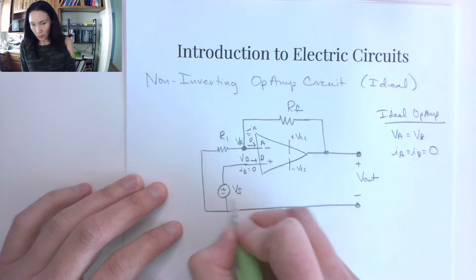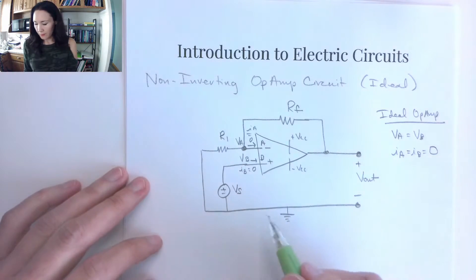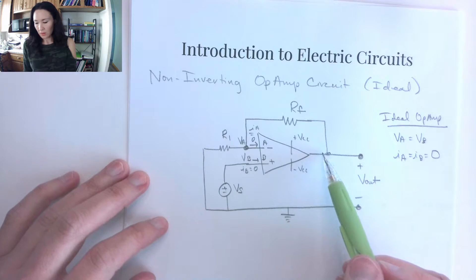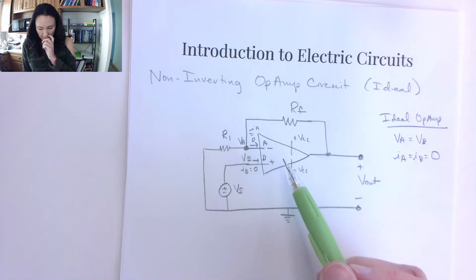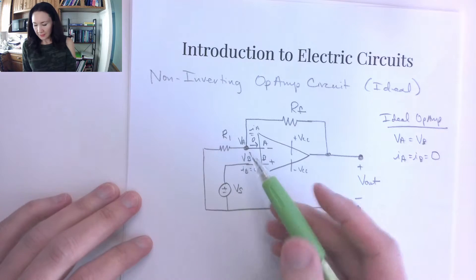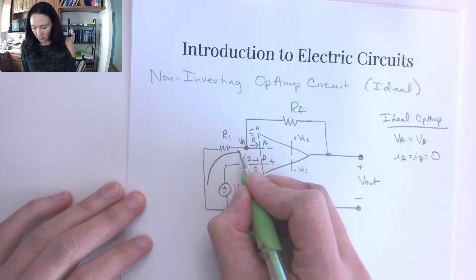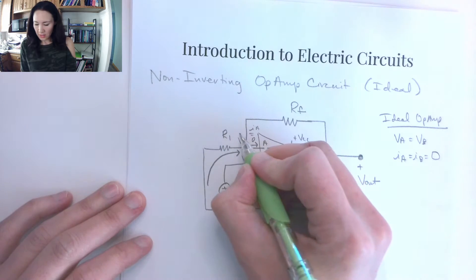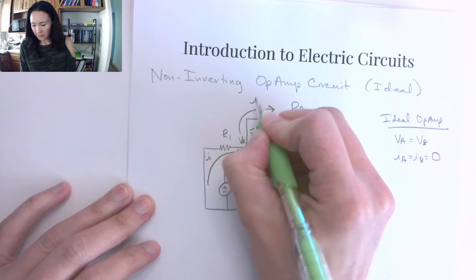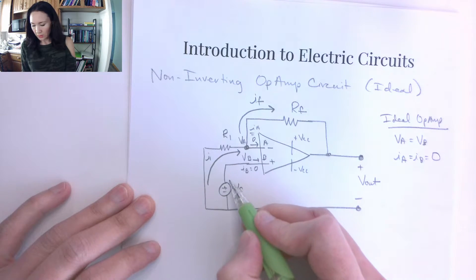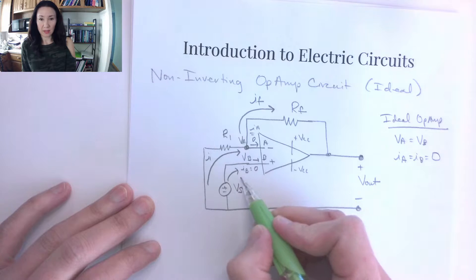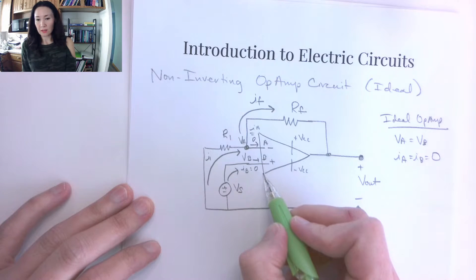I'll call this V source — sometimes labeled V in. Since we have a negative feedback loop, the gain of this amplifier is a linear ratio between V out and V in. There's a current that comes to node VA, and some of it takes the path through the feedback loop — I'll label this IA and IF. We approximate these currents as negligible, so IB equals zero.